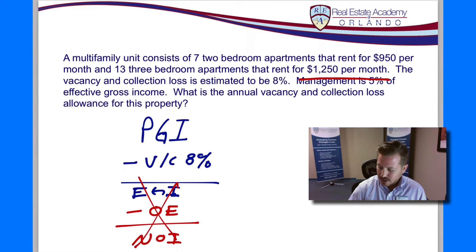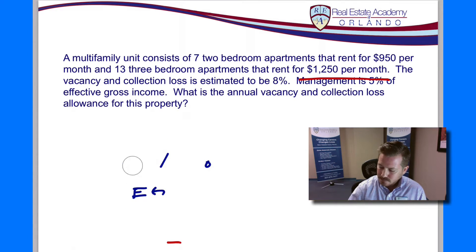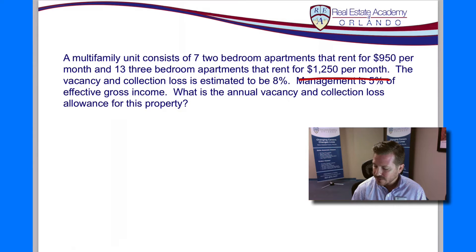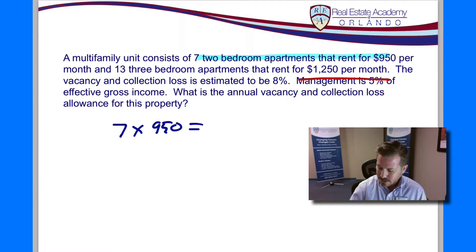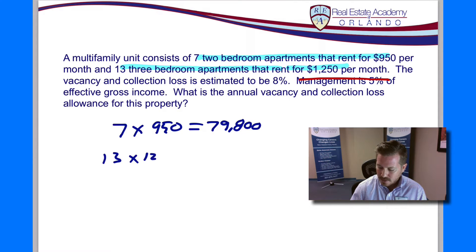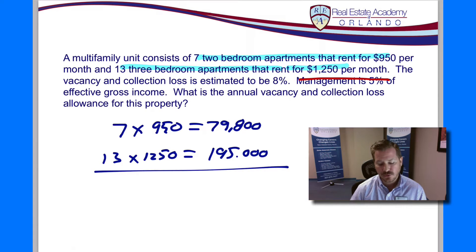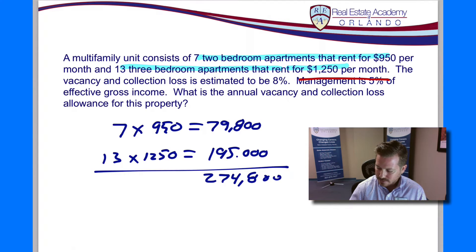So let's break down what we actually need. First we have to figure out what is our PGI — our pie in the sky number — how much can we possibly earn on this property in a given year? We have seven two-bedroom apartments, so we've got seven of those, multiply that by $950 per month. And that's going to give us $79,800 for the year. Then we have 13 three-bedroom apartments and they rent for $1,250 per month. So let's take our 13 three-bedroom apartments at $1,250 per month — that gives us $195,000. Now we're just going to add these two numbers together. This gives us $274,800, and this is our PGI, our potential gross income.